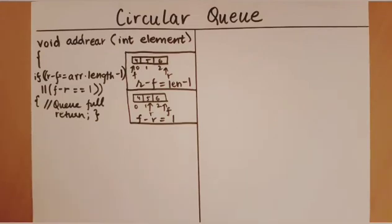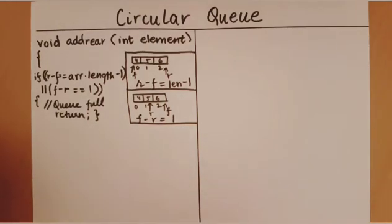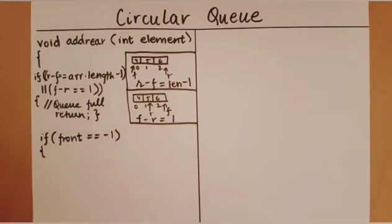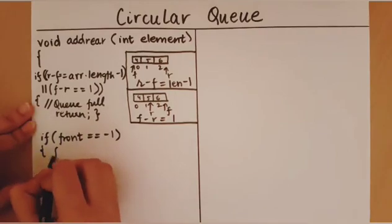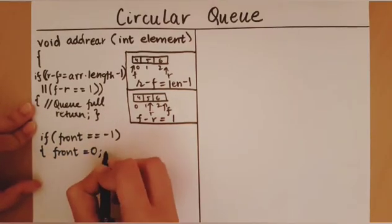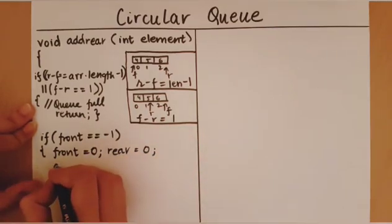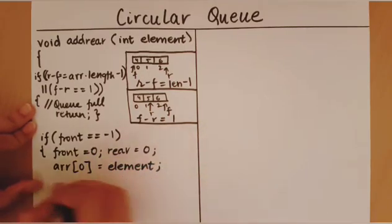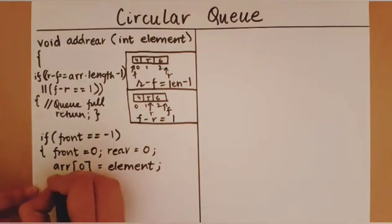Now we have checked whether the queue is full. When we reach this line of code we are sure the queue is not full and there is scope to add an element to the rear. The next thing we must check is whether we are adding the first element to the queue — that is, if the queue is empty. If front is equal to minus one, the queue is empty. In this case we make front zero, rear zero, and add the input element into the zeroth position, then return from the function.